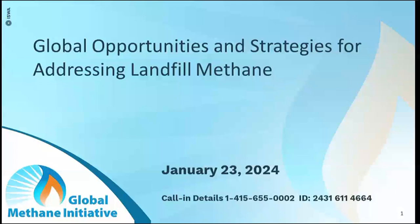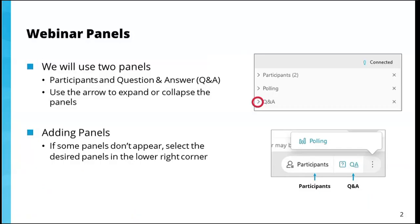Before we get started, just a few webinar software tips. There are two ways to connect with audio today: you can either listen through your computer speakers or use the number posted on the webinar slide. All participant lines will be muted for the duration of the webinar. We'll be using two panels — the participant panel and the question and answer panel — both found on the right-hand side of your screen. Click the arrow next to the desired panel to expand it.